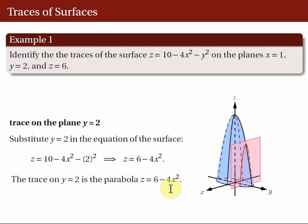Here's the picture. This is the surface, and this is the plane Y = 2. The plane Y = 2 is parallel to the XZ coordinate plane. So, the intersection of Y = 2 with the surface is this red curve defined by Z = 6 - 4X².